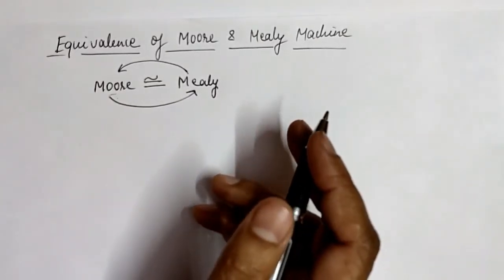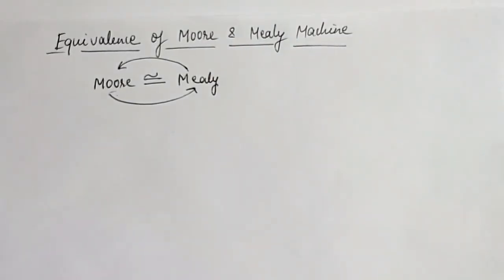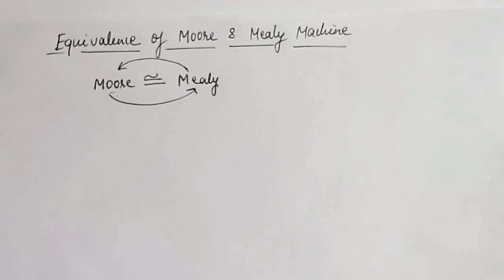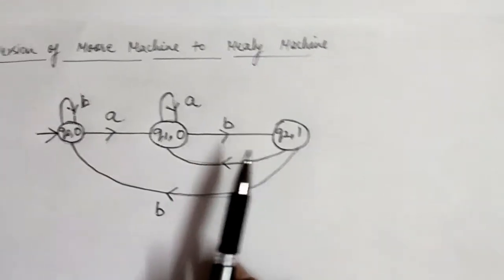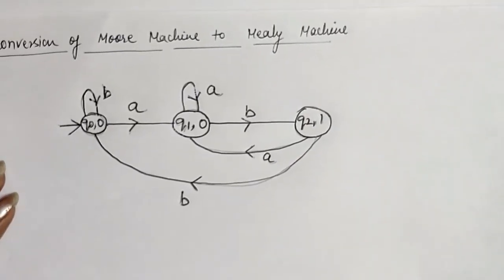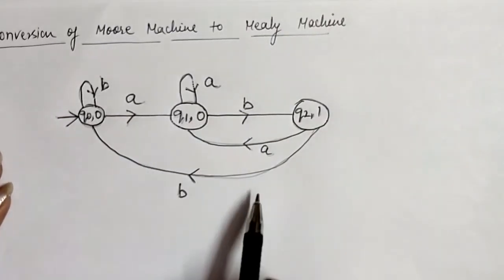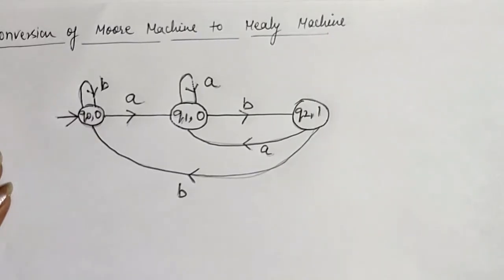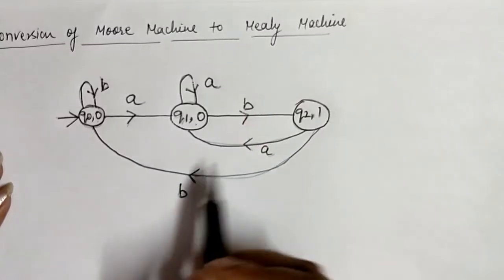In this video we first see how we convert a Moore machine into a Mealy machine, and in the next video we see how to convert a Mealy machine into a Moore machine. This is a Moore machine that we have to convert into a Mealy machine. It is a Moore machine because the output is associated with the state, not with the input. To convert it, we need to move the outputs that are associated with states so that they become associated with the transitions.